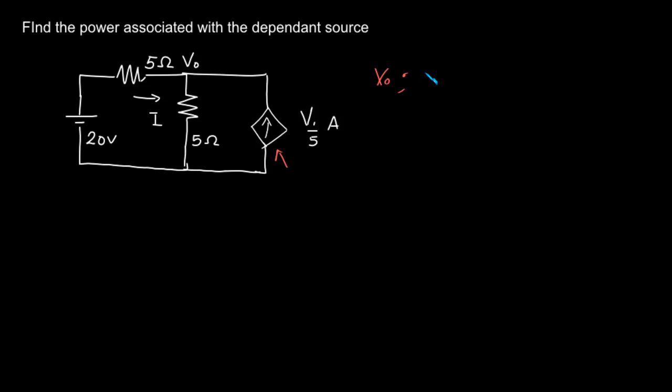And from V0, we can find out the power as power is V0 into V1 by 5.